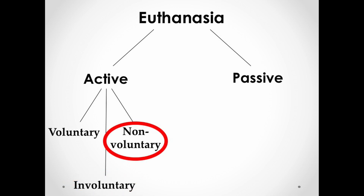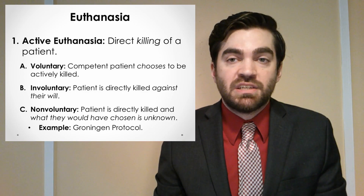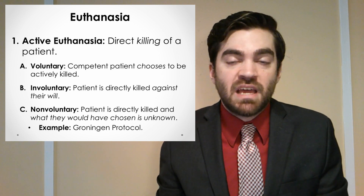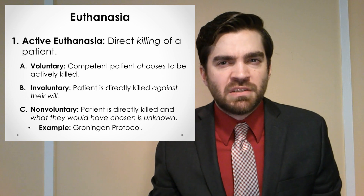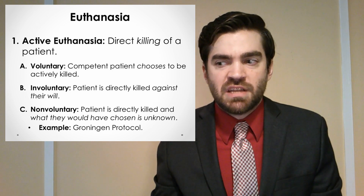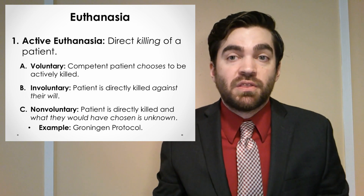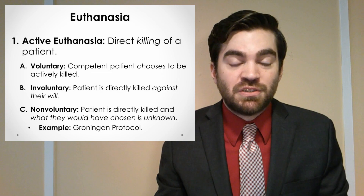There's a third category: non-voluntary active euthanasia. This is when a patient is killed, but what they would have wanted is either unknown or unavailable. In the Netherlands, for example, there's something called the Groningen Protocol, which gives criteria for when it's okay to actively euthanize an infant born with a condition associated with excruciating pain and no hope of survival. In those cases, the infant can't make a decision for themselves, so what they would want is unknown. It doesn't count as involuntary because it's not against their wishes, and it doesn't count as voluntary because it's not what they chose. So active killing in those cases counts as non-voluntary. In the United States, it's not legal for doctors to do this kind of thing anywhere.